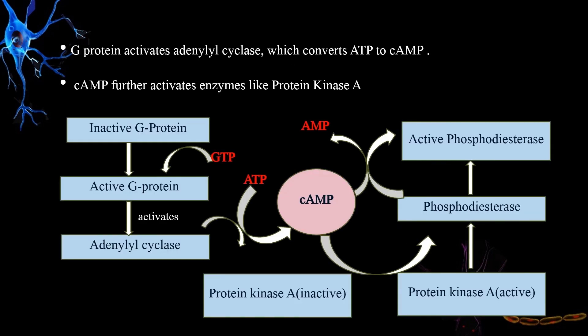Let's look at the synthesis and functions of cAMP. The G protein activates adenylyl cyclase, which converts ATP to cAMP. Normally the G protein is in an inactive state. Whenever GTP binds with the G protein, the inactive G protein becomes active, and the active G protein further activates adenylyl cyclase — the enzyme which converts ATP to cAMP.